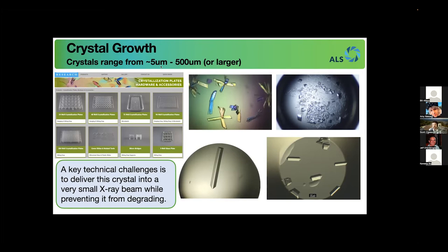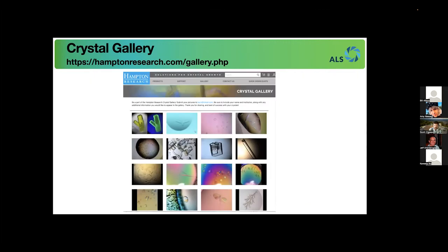One key technical challenge for crystallography is to position this extremely small crystal into a very small x-ray beam. The crystals are made of proteins — they're biological and quite delicate. Unlike a salt crystal or sugar crystal that can sit on the shelf for years, protein crystals are sort of like milk or cheese; they will go bad after a while. If you're interested in seeing some pictures of crystals, head over to hamptonresearch.com — they're actually quite beautiful, especially when viewed through polarized light.